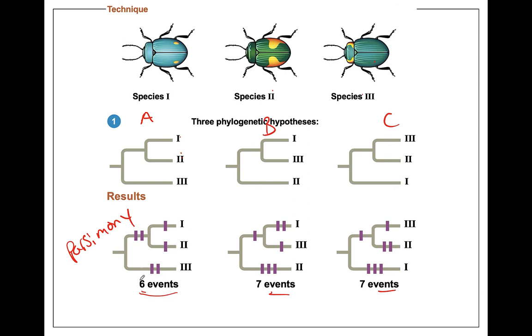But if Tree A also required seven events, we would have to look at which tree is most likely and choose based on that information.